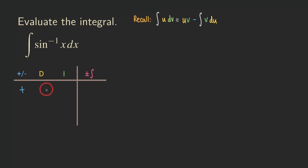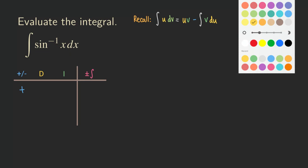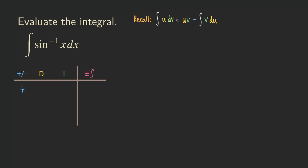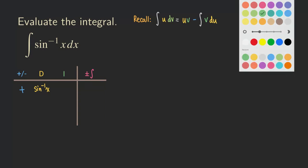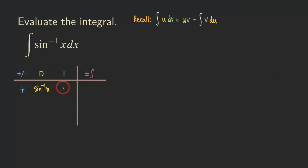Now, what we're going to do is choose our U to put here. There is only this function, and we know its derivative but we don't know its antiderivative — because that's what we're trying to find. So U is going to be sine inverse of X. Now, what about the DV column — the I column? It's going to be just the DX right here. So I'm just going to put a one right here.